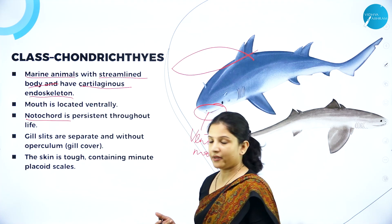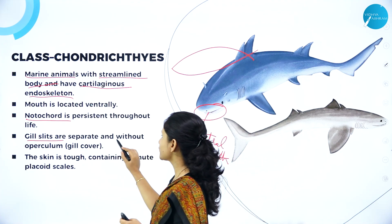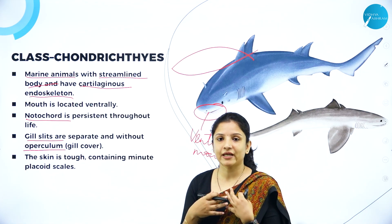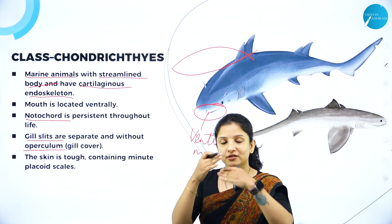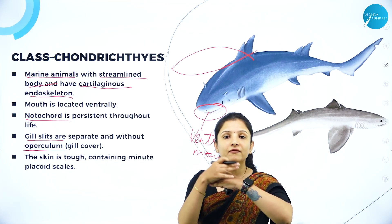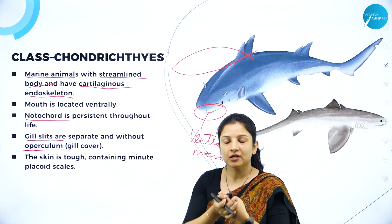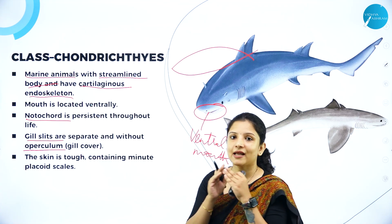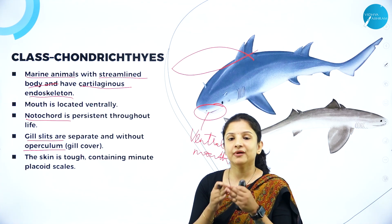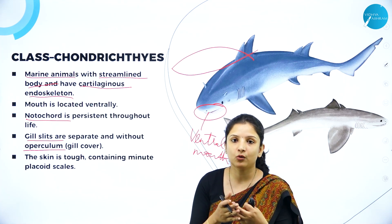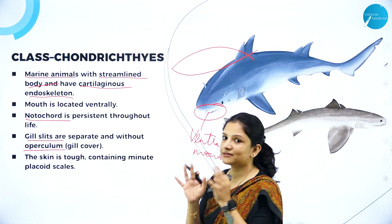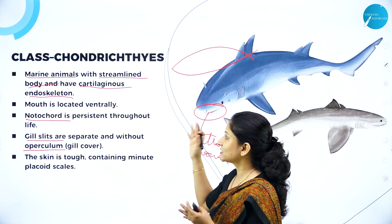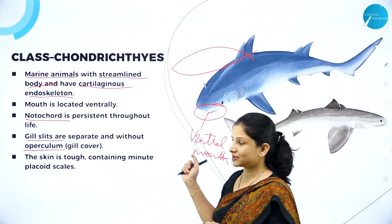Because they are marine, they have gill slits which do not have an operculum. Operculum is a plate-like structure which covers the gills. In fishes like Osteichthyes, we can't see the gill slits because they have operculum. But in Chondrichthyes, the gill slits are not covered by operculum. That is why they are placed separately under Chondrichthyes and not grouped under Osteichthyes.